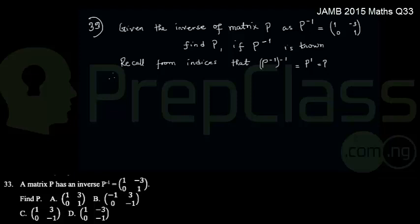We are currently on question 33. Question 33 is a question of matrices. The question says if matrix P has an inverse, P inverse equals 1, 0, minus 3, and 1. The question says find P.